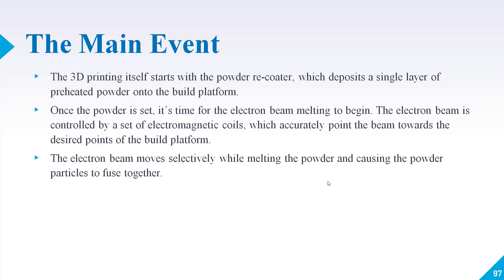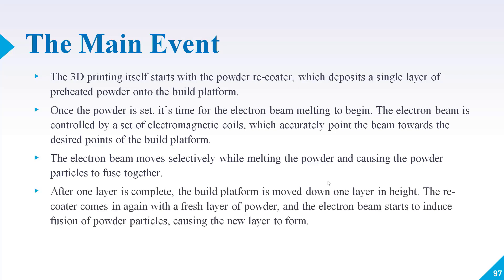The electron beam moves selectively while melting the powder and causing the powder particles to fuse together. Once this electron beam contacts the metal powder, the metal powder will fuse and they will make a layer.